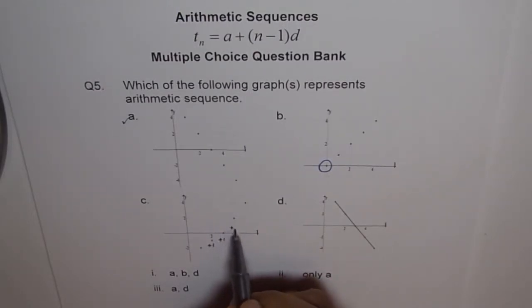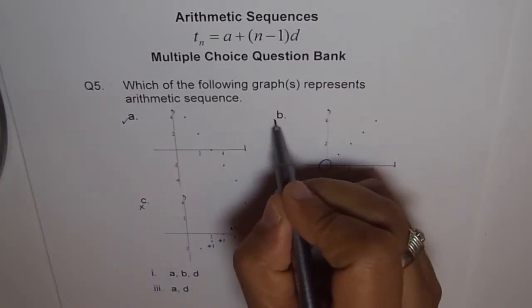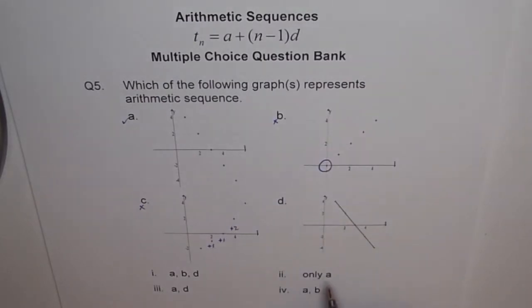Do you see that? Plus 1. And now it becomes plus 2. So this is not arithmetic sequence. And we found this is also not arithmetic sequence because it started with 0.